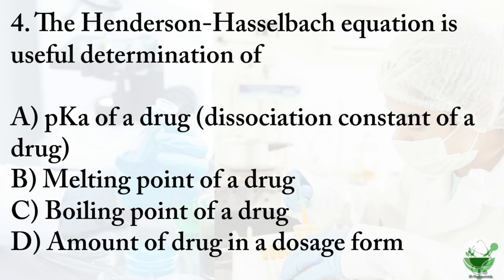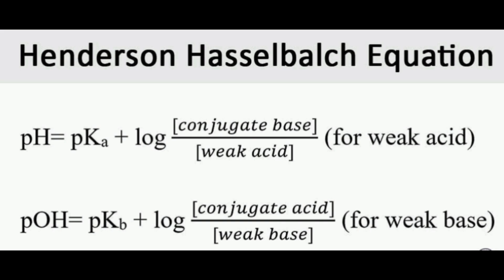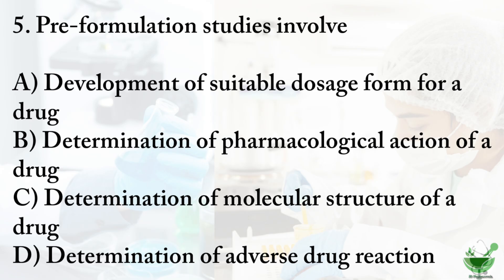Question number four: the Henderson-Hasselbalch equation is useful for determination of — option A: pKa of a drug, that is the dissociation constant of a drug, option B: melting point of a drug, option C: boiling point of a drug, option D: amount of drug in a dosage form. The correct option is A, dissociation constant of a drug. The Henderson-Hasselbalch equation is used to calculate the percent of a drug that exists in ionized form, or to determine the concentration of a drug across the biological membrane.